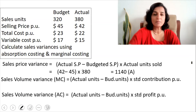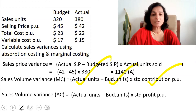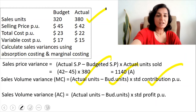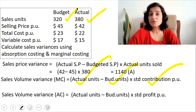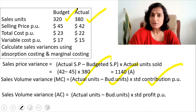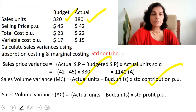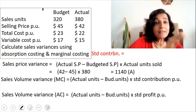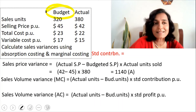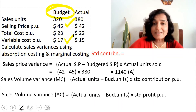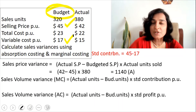For the sales volume variance under marginal costing: actual units minus budgeted units, multiplied by standard contribution per unit. Actual units are 380, budgeted units are 320. We need to calculate standard contribution. Contribution is selling price minus variable cost, and we always pick figures from the budget column because that's the standard. Standard selling price is 45, standard variable cost is 17, so standard contribution is 45 minus 17, giving 28.